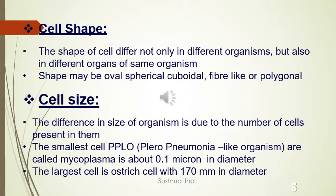Now let us talk about cell shape. Shape can differ in different organisms but also in the same organism, different organs like liver and kidney have different cell shapes. It depends upon the function the organ is performing. Cells can have the shape like oval, spherical, cuboidal, fiber-like, or polygonal shape.